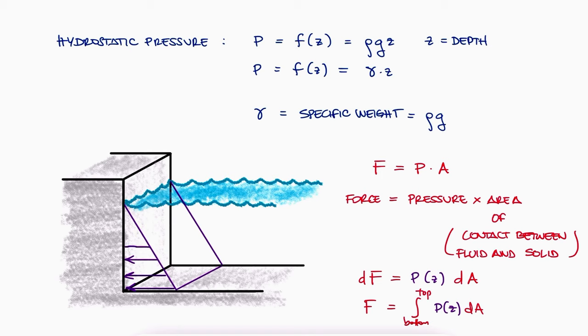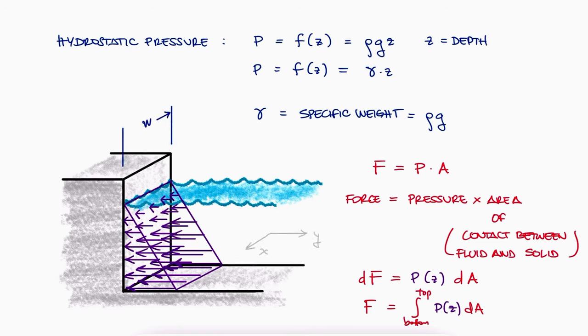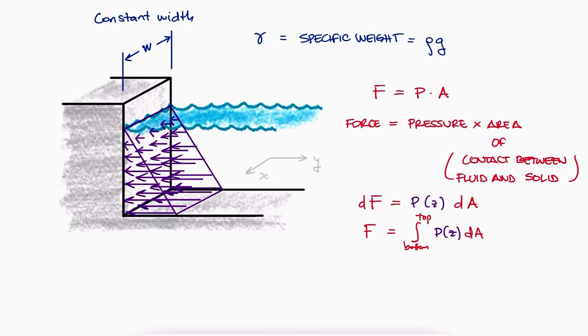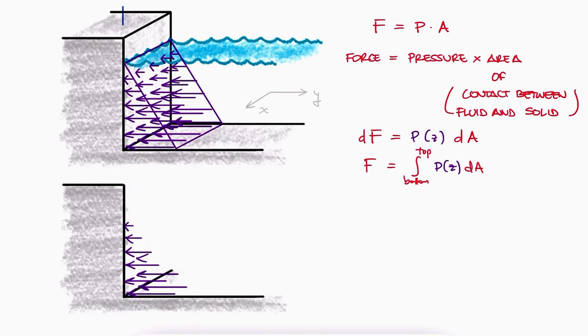Now, since the pressure is not changing in the horizontal axes and the submerged surfaces usually have a constant width, a reasonable 2D representation of this 3D problem is to assume the pressure on the wall as a triangular distributed load.